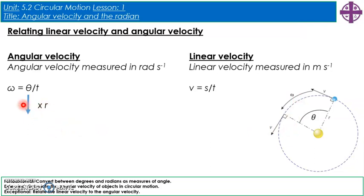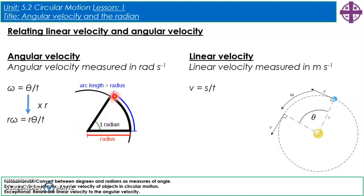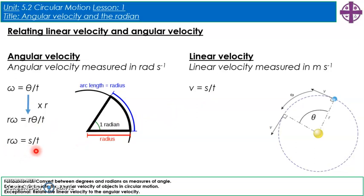Multiplying both sides of the angular velocity equation by r gives r·omega = r·theta / t. Since theta times r equals the arc length s — the distance the object has moved — this becomes r·omega = s/t, which equals v. So we get the new equation: v = r·omega.